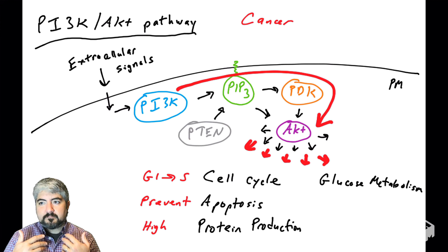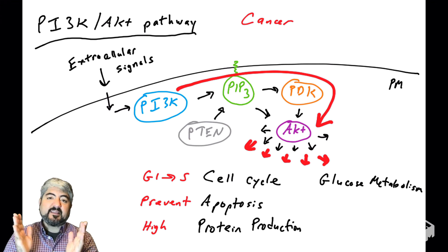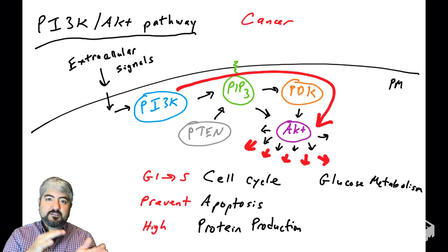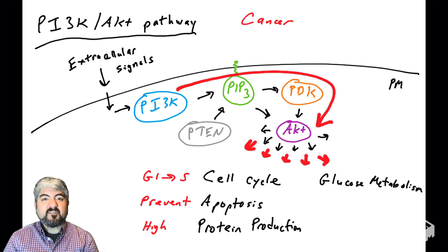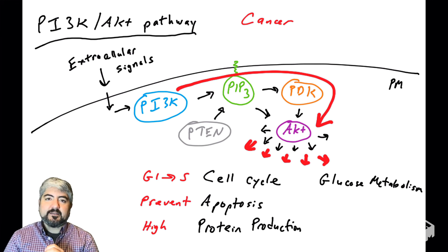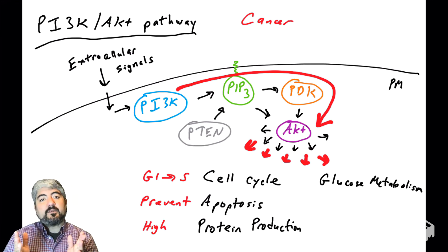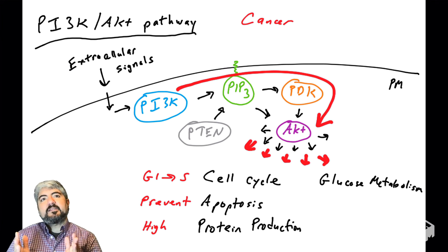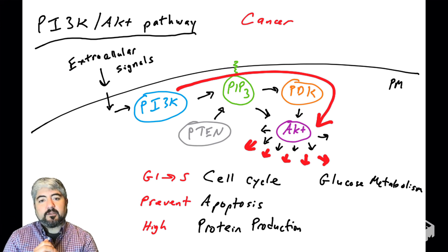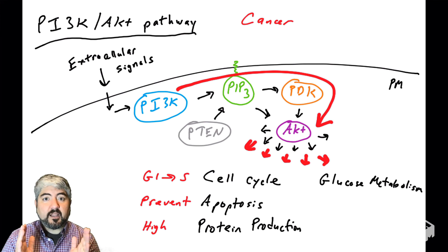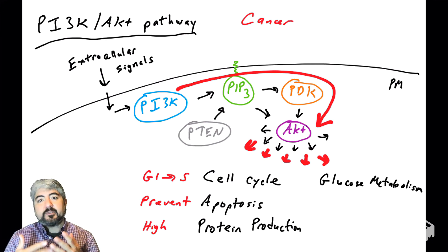When it is overactive, cells are continually going through the cell cycle — they're constantly thinking it's time to go from G1 to S, G2, M, and make more cells. When this pathway is active, apoptosis is inhibited or prevented, which allows cancer cells to survive in places and areas of the body they shouldn't be. They're dividing when they shouldn't be, and it allows cancer cells to have a very high metabolic rate, consuming sugar and producing lots of proteins. When this pathway is overactive, that is very bad, because it allows these cancer cells to grow and survive when they shouldn't.